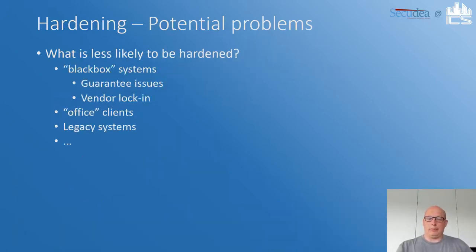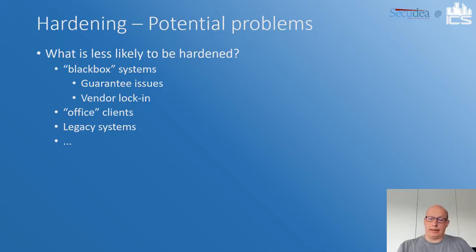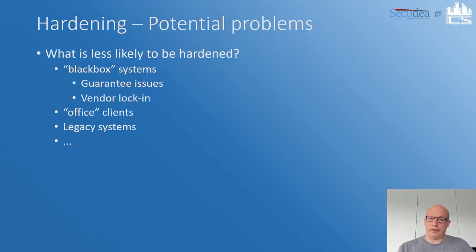What's less likely to be hardened? More and more black box systems, because those are often used as vendor lock-ins. Touching or changing settings on a black box system can cause guarantee issues — so you need to mitigate potential issues another way. Other systems less likely to be hardened include office clients that need broad functionality, and legacy systems — people are often reluctant to touch legacy systems because they cannot predict what will happen if they configure something on them.